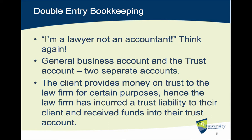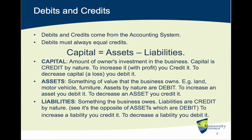There are two main accounts that law firms have: a general business account and a trust account. These are two distinct and separate accounts. The client provides money on trust to the law firm for certain purposes, so the law firm has incurred a trust liability to their client and received funds into their trust account. Those funds must be properly accounted for and managed. In any accounting system, you tend to have debits and credits, and these two concepts must equal. There's an equation: capital equals assets minus liabilities — capital being the owner's investment, assets being something of value the business owns, and liabilities being the things the business owes.